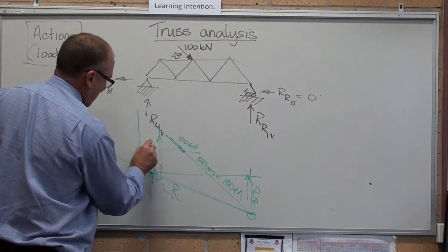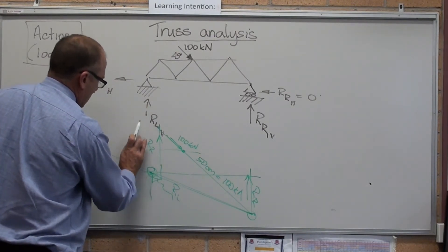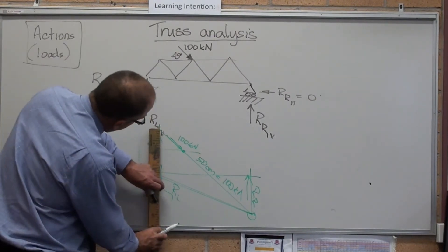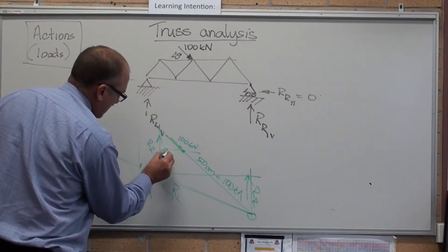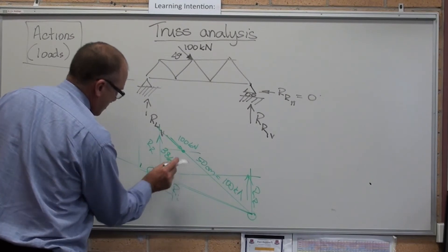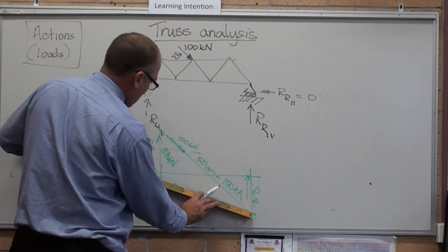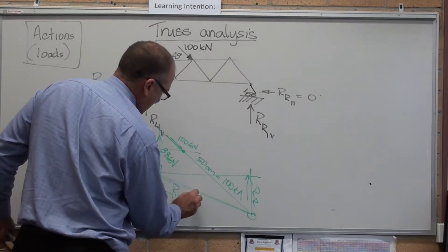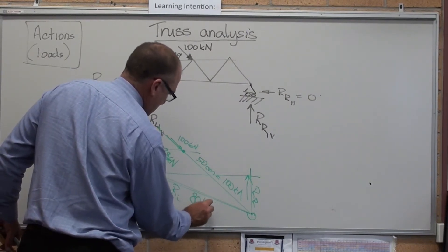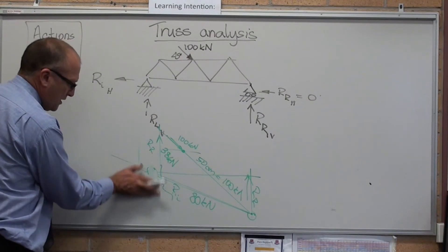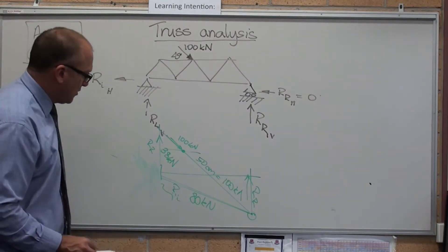My reaction on the right is the vertical reaction. That is 19 centimeters. That's 38 kilonewtons. That one there is 40 centimeters. That's 80 kilonewtons. I've already calculated my reactions on the spot.